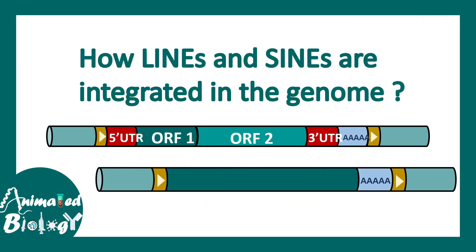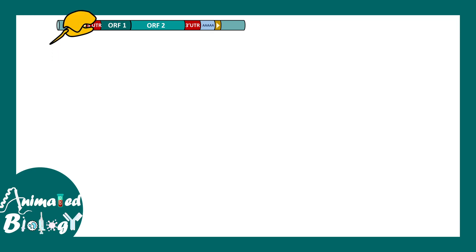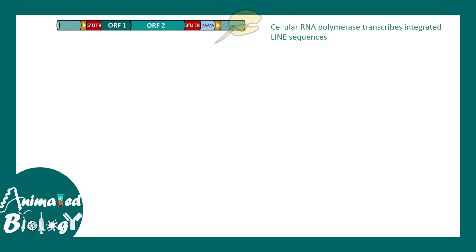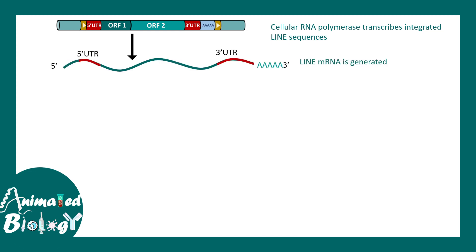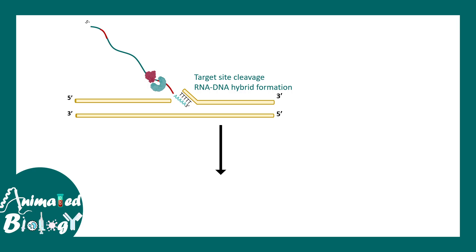Let's see how LINEs or SINEs get integrated into the genome — how these transposons hop from one region to another. LINEs can be transcribed by RNA Pol II, which forms the LINE mRNA. This LINE mRNA is very similar to a normal mRNA found in the cytoplasm — it has a 5' UTR, 3' UTR, and a polyadenylation site. The ORF2-derived proteins immediately bind to the LINE mRNA and form a complex, which guides the further steps of integration. This complex escorts them into the T-rich region in the target DNA, forming an AT hybrid — an RNA-DNA hybrid in the T-rich region.